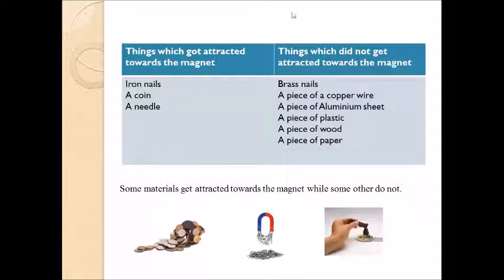Iron nail, a coin, a needle got attracted towards the magnet. Here you can see, first diagram shows some coins got attracted towards the magnet. Second diagram shows some nails got attracted to magnet.